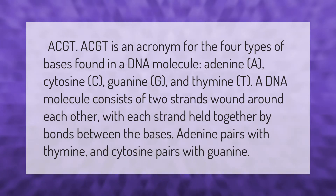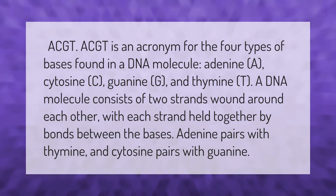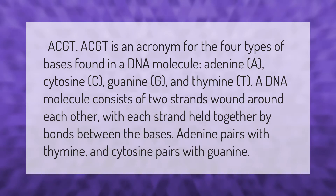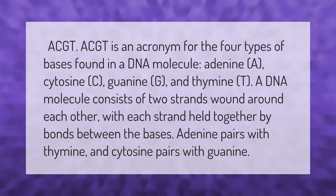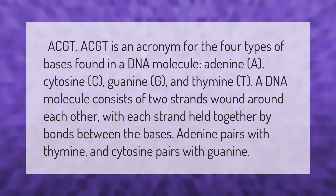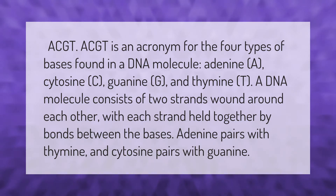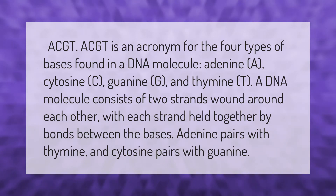ACGT is an acronym for the four types of bases found in a DNA molecule: adenine (A), cytosine (C), guanine (G), and thymine (T). A DNA molecule consists of two strands wound around each other, with each strand held together by bonds between the bases. Adenine pairs with thymine, and cytosine pairs with guanine.